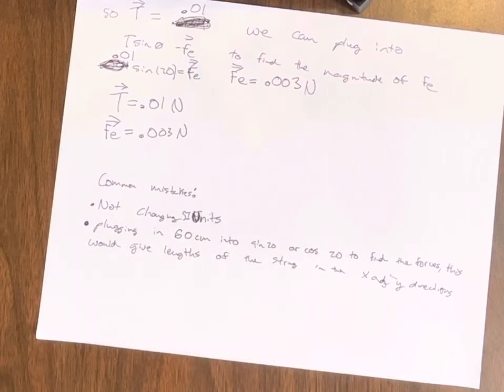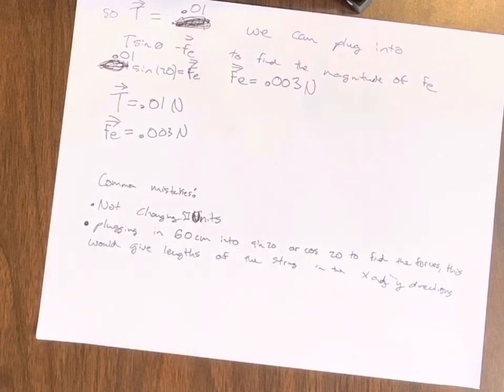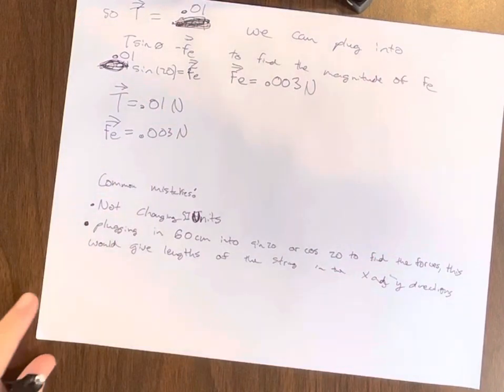Some common mistakes: one, not converting our SI units from grams to kilograms. And then a big one is plugging in the 60 centimeters into sine 20 or cosine 20 to find the forces. But this would, in reality, just give you the lengths of the string in the X and Y directions and not the forces. So the 60 centimeters there kind of distract you. We're not trying to find the distance or the length. We're trying to find forces, and we don't use the length of something to find our forces. Not in this equation.